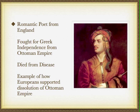This poet is a very good example of Ottoman weakness. He was a romantic poet from England, and the Europeans considered the Ottoman Empire the sick man of Europe. He went and fought for Greek independence from the Ottoman Empire, and tragically died from a disease he caught there. It's an example of how Europeans supported the dissolution of the Ottoman Empire, who had always favored Greek and Roman ideas.